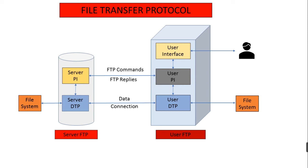At this point the user is authorized by the server and is able to transfer one or more files stored in the local file system into the remote file system. There is typically a one-to-one correspondence between the commands a user introduces through the user agent and the FTP commands sent across the control connection. Each command is followed by a reply sent from server to client. The replies are three-digit numbers with an optional message. Some typical replies are: 125 — data connection already open, transfer starting; 425 — can't open data connection; 452 — error writing file.